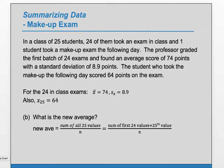How do I find the sum of the first 24 values? Well, I know that the sum is the average times n. So, the sum of the first 24 values should be the average of the 24 values times 24.